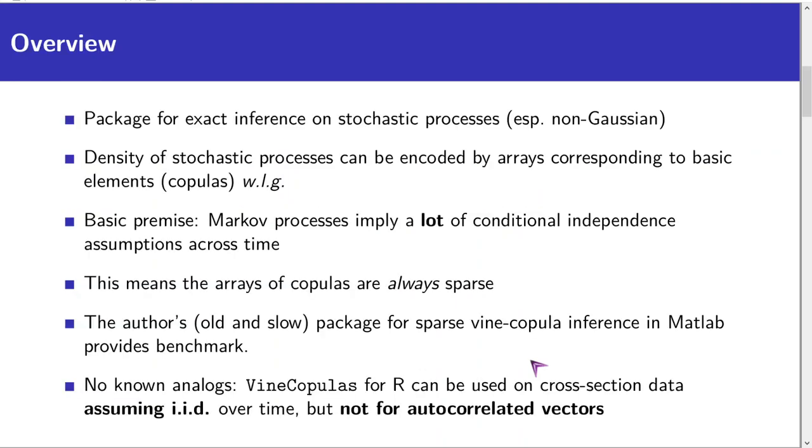The starting point is the realization that any multivariate density can be represented by a product of a huge number of elementary blocks – the bivariate conditional copula densities. We'll see later how the Markov property allows reducing the number of blocks in the likelihood calculation.